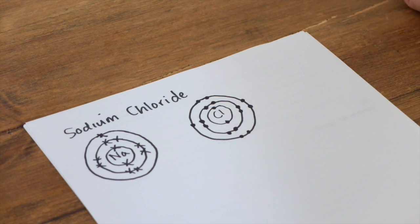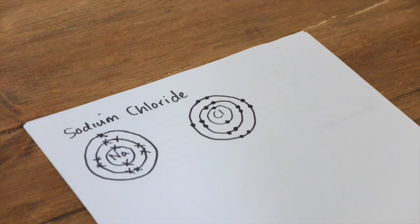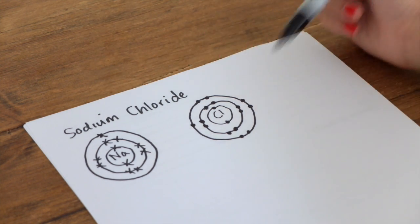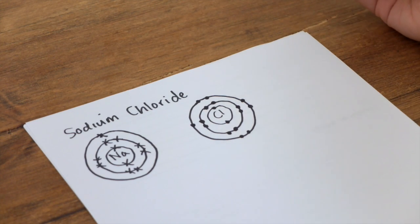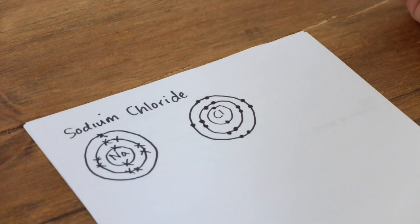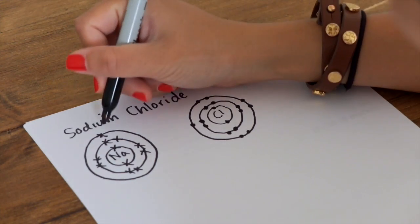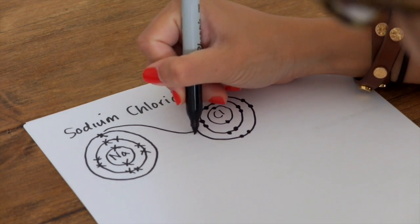Remember, both elements want to have a full outer shell, and that would be eight in this case. So the straightforward thing here is for sodium to transfer its electron to chlorine. Why is that? Because it's much easier to lose one electron than gain seven.